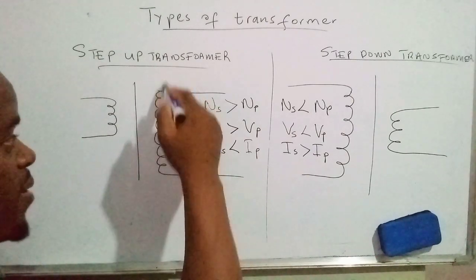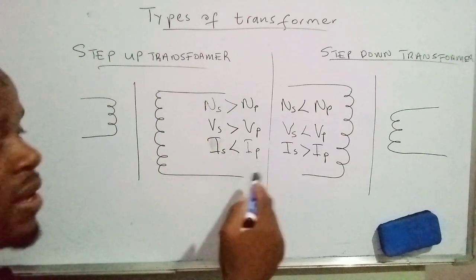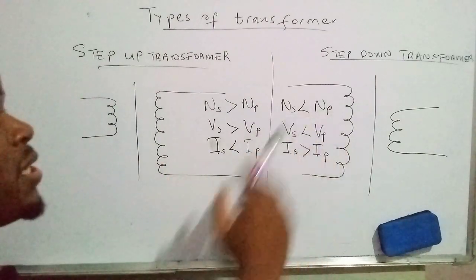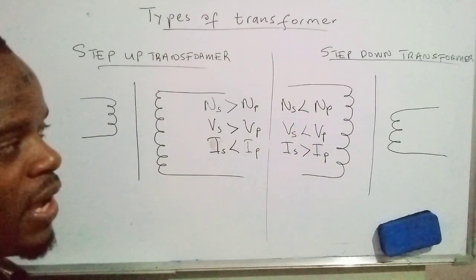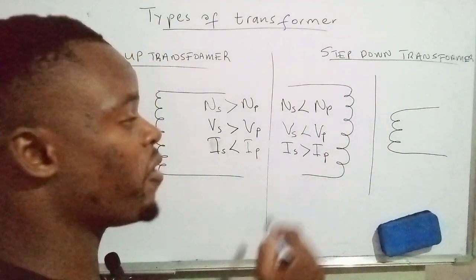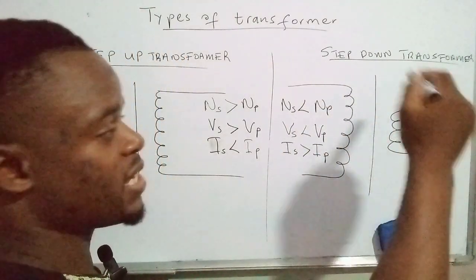through the secondary coil, however, is less than the current through the primary coil. Let's compare this to the step-down transformer. A step-down transformer has more turns in the primary coil as compared to the number of turns